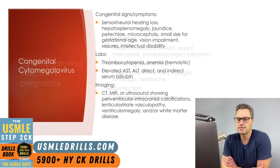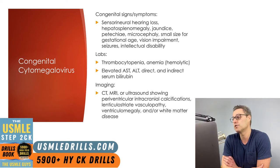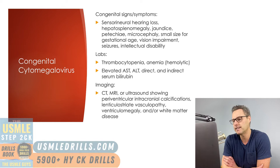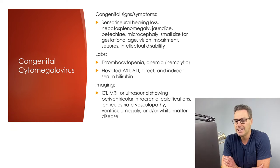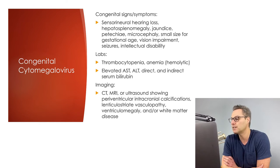The congenital signs and symptoms of CMV include sensorineural hearing loss — importantly, congenital cytomegalovirus infection is the most common cause of non-hereditary sensorineural hearing loss. Additionally, look for hepatosplenomegaly, jaundice, petechiae, microcephaly, small size for gestational age, vision impairment, seizures, and/or intellectual disability.